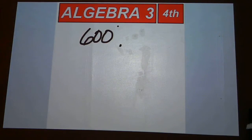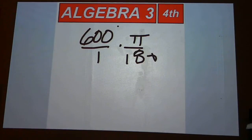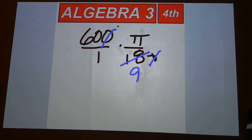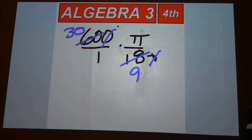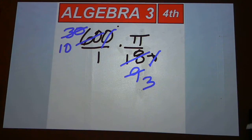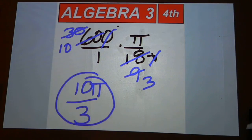Multiply 600 degrees by pi over 180 and then do your cancellations. You can cancel a zero and a zero. You can get a 2 out of 18 for a 9, and then a 2 out of 60 for a 30, but you can still go even further than that. 3 goes into 9 three times and into 30 ten times. So it's 10 pi over 3 for the final answer.